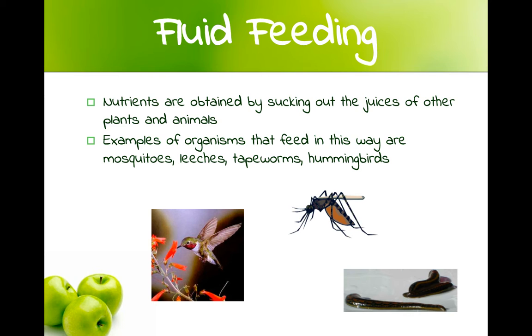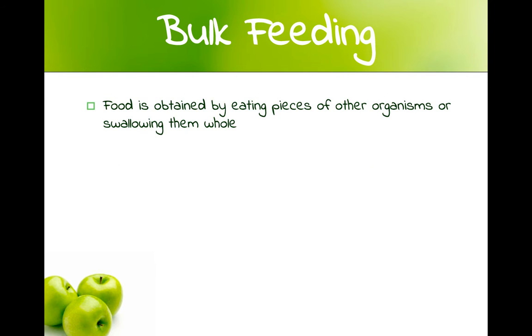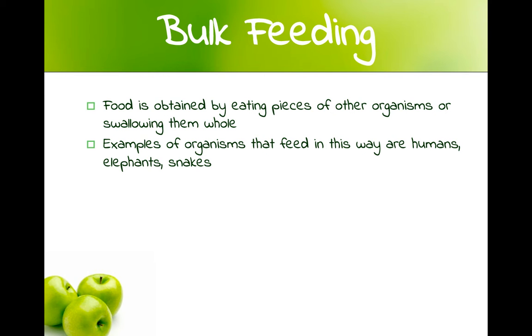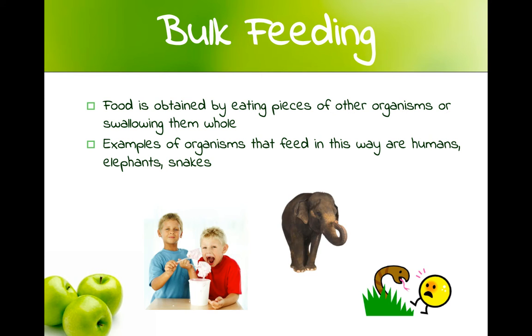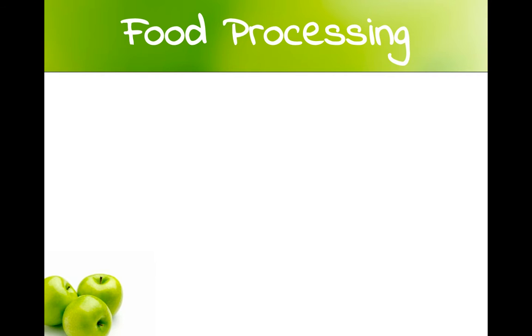They're sucking out either the juices of animals or plants. And finally, bulk feeding, which is what we do — food is obtained by eating pieces of other organisms or swallowing them whole. Examples of organisms that feed this way are humans, elephants, and snakes, and many others. Those are the different ways that heterotrophs can get food into their body, and now the food needs to be processed.